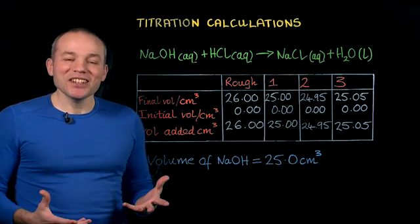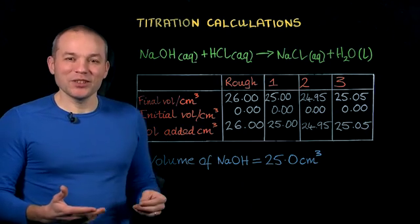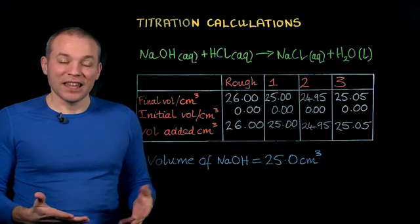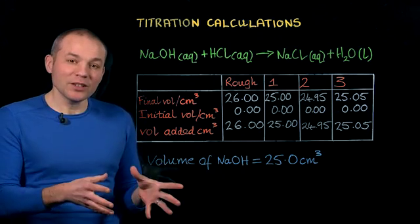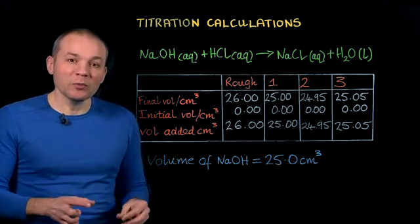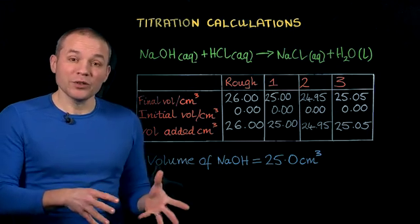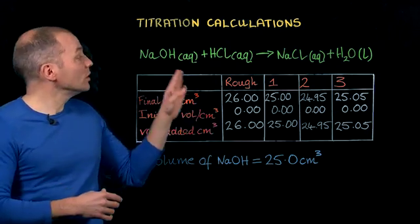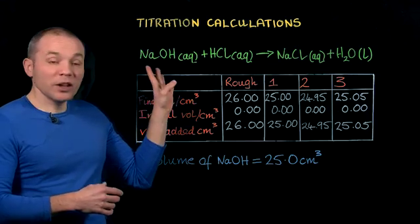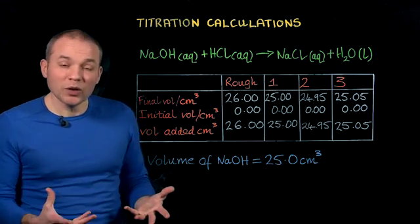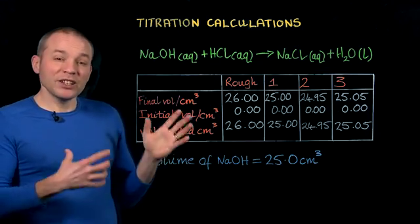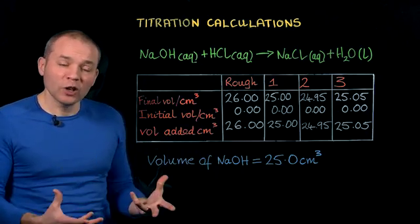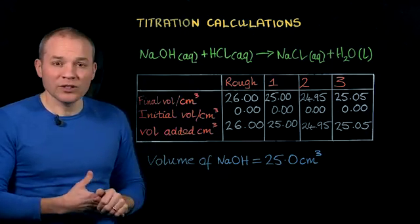We use titration calculations to work out the concentration of a solution, and we do that by reacting that solution with a known volume of a different solution that we do know the concentration of. In this example, the sodium hydroxide is the solution that we know the concentration of, and we're going to use that to calculate the concentration of the hydrochloric acid, the HCl, in this equation.